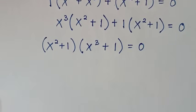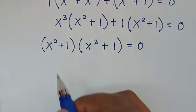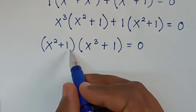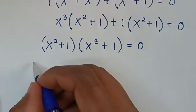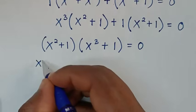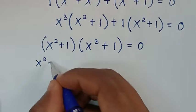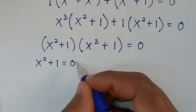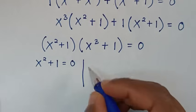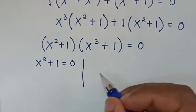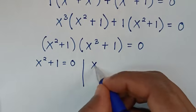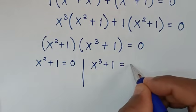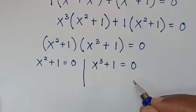Then in the next step from here we have two solutions. The first solution is x squared plus 1 is equal to 0, and the second solution is x power 3 plus 1 is equal to 0.